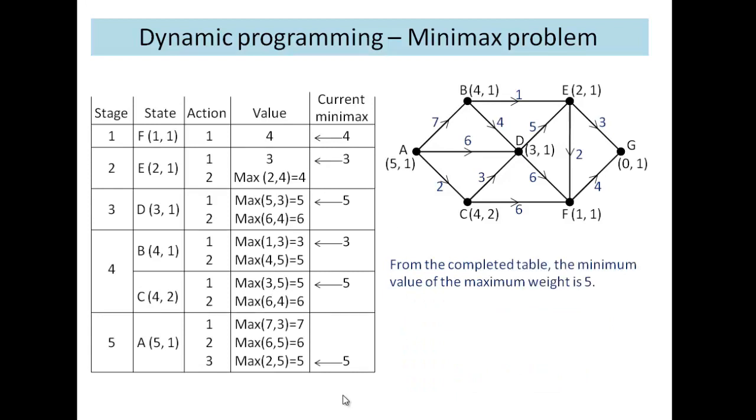This is a completed table for that route and we can see that we've identified here our minimax, our minimum maximum. You can see going from A, stage 5, state 1, we have values of 7, 6, and 5, and we've picked the smallest, the 5. We can find our route from here.